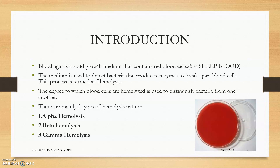Blood agar is a solid growth medium that contains RBCs and many other components — it does not contain only RBCs. Blood agar contains many components and it also contains 5% sheep blood. Sheep blood RBCs are very fragile and can be burst by simple hemolysis, which is why human or whole RBCs are not used. This medium is used to identify bacteria that have the ability to produce an enzyme or extracellular toxin called hemolysin, which breaks apart RBCs. This process is termed hemolysis, or lysis of the red blood cell.